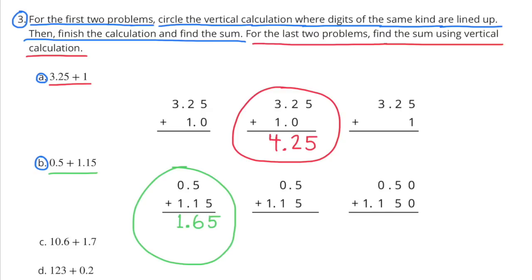A. 3 and 25 hundredths plus 1. I circled the middle one because the decimals were lined up. B. 5 tenths plus 1 and 15 hundredths. I circled the first one because the decimals were also lined up. 3 and 25 hundredths plus 1 equals 4 and 25 hundredths. 5 tenths plus 1 and 15 hundredths equals 1 and 65 hundredths.